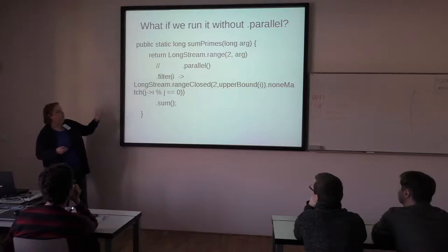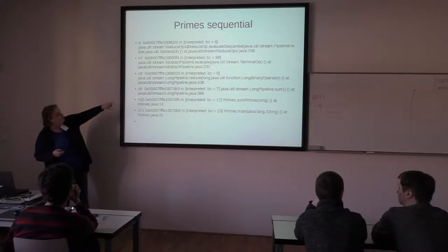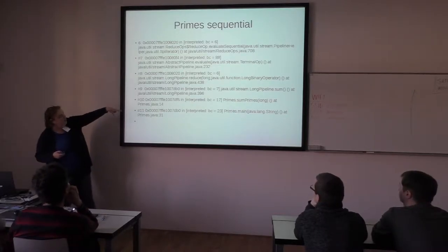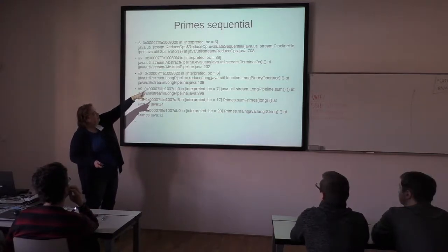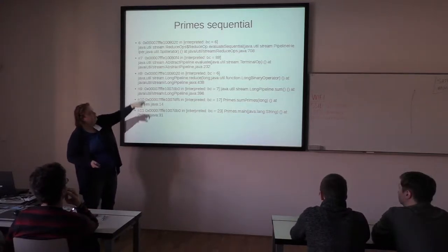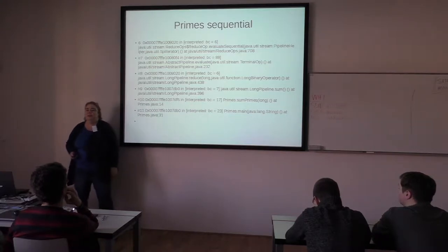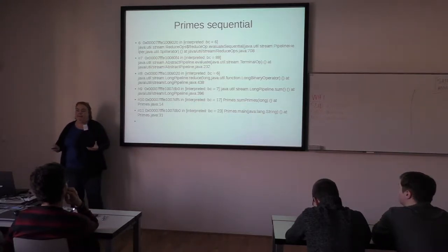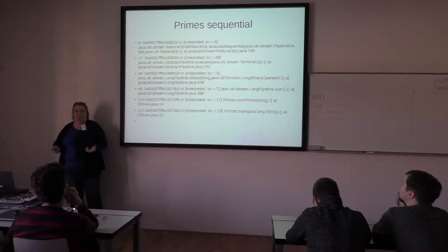And you can comment out the parallel and do it. And you can see that the sequential looks a lot like what I showed you for the parallel, except that you get an evaluate sequential for your reduction op for the sum. All right. If anybody has questions, please ask because I'm going through this really quickly.